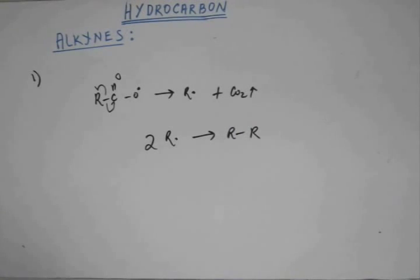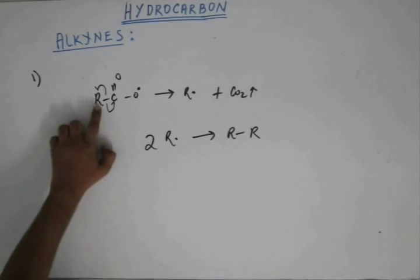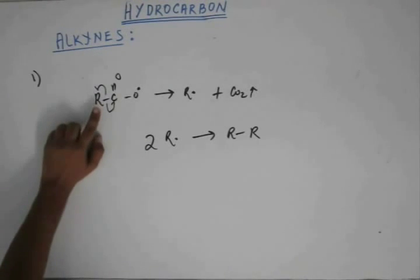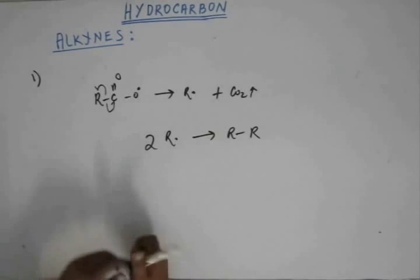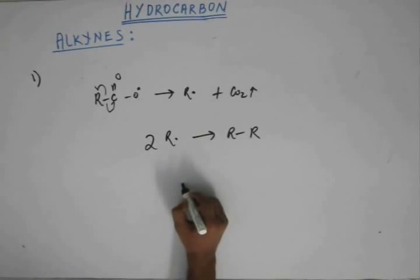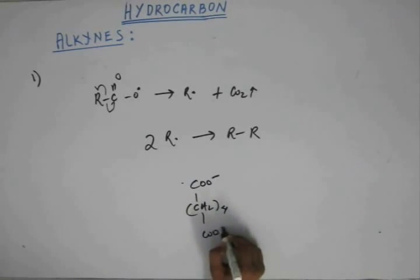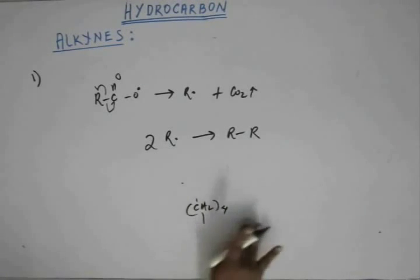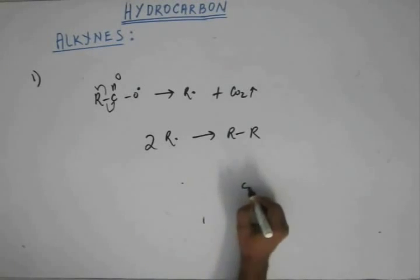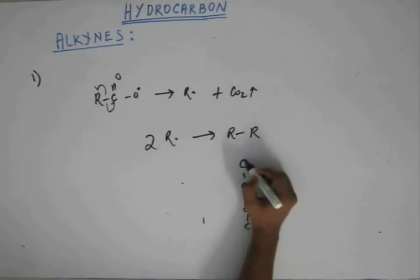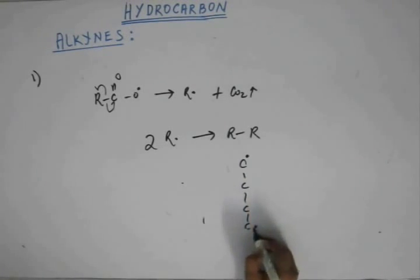That means when we have an acid, the carbon attached to this CO2 part gets a free radical and two of them dimerizes. I also taught you if two of the acids are within the same molecule, suppose they are within the same molecule, then this will go away and this will also go away. So, there are four carbon in the chain and the carbons attached to the acid part directly will have unpaired electron on them.